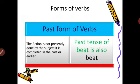Past form of verbs — this is the third form of any verb. The action is not presently done by the subject; it is completed in the past or earlier. The past tense of beat is also the word beat itself, but it will be accompanied with some other past tense helping verbs to indicate the time. Mostly, the past form of verbs ends with -ed.